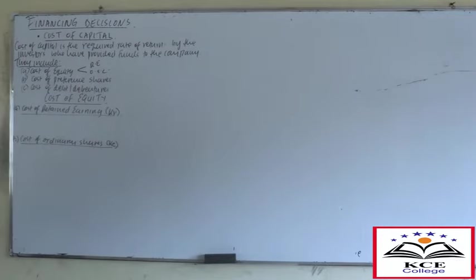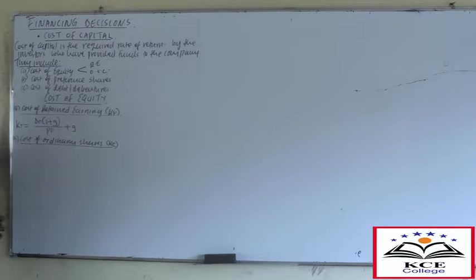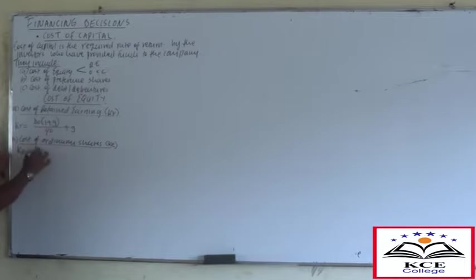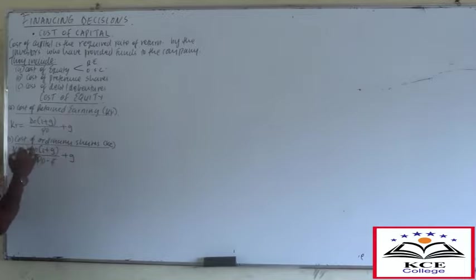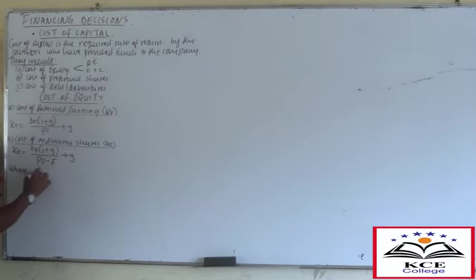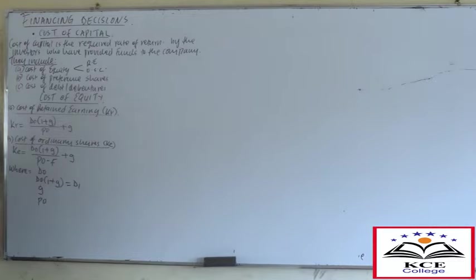How do you determine the cost of retained earnings? KR = D0(1+G) / P0 + G, where D0(1+G) is also the same as D1. For cost of ordinary shares: KE = D0(1+G) / (P0 - F) + G, where F represents the flotation cost plus the growth rate. What is D0, D1, G, P0, and F?